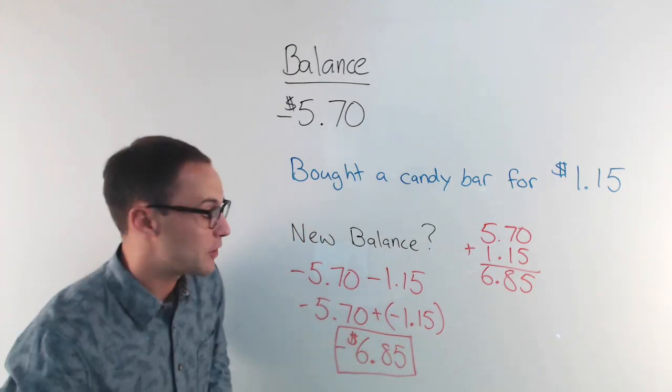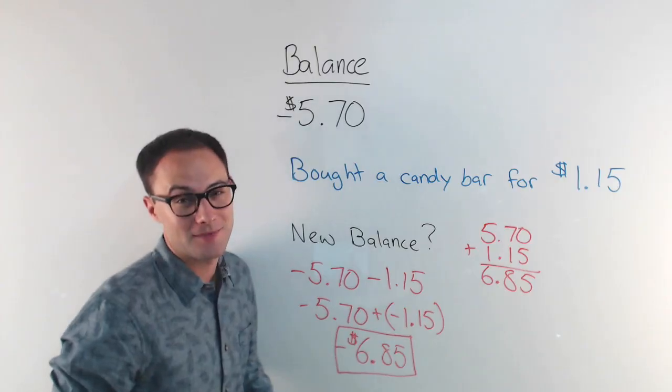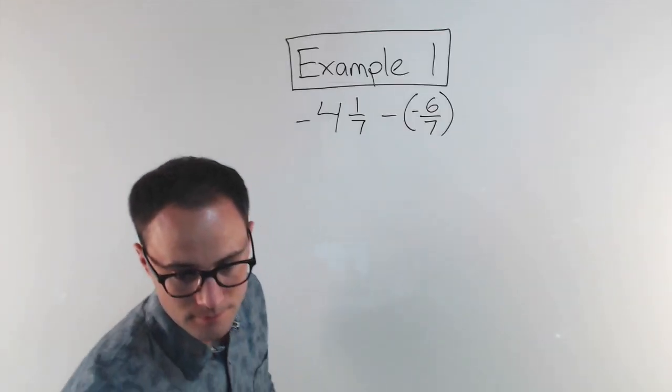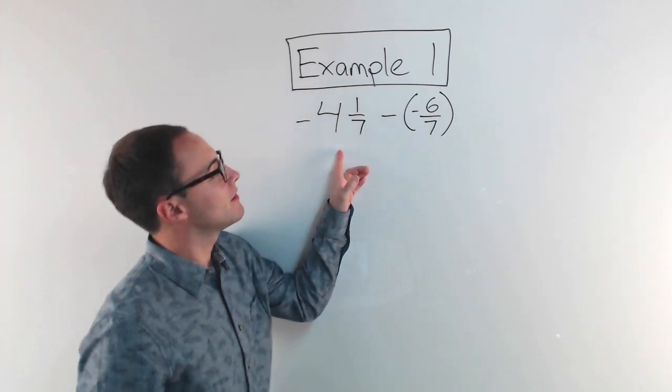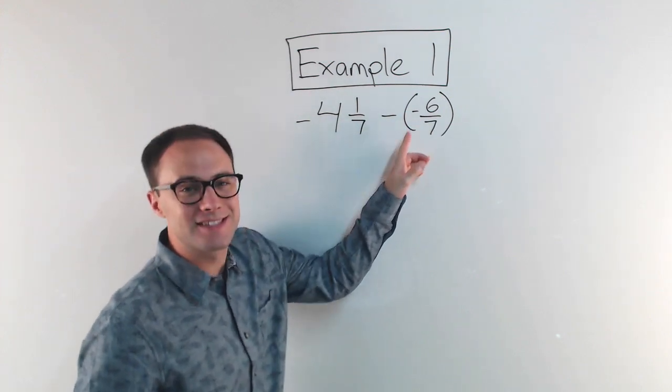And the bank would not be very happy with me. Let's try an example. Example 1, negative 4 and 1/7 minus a negative 6/7.